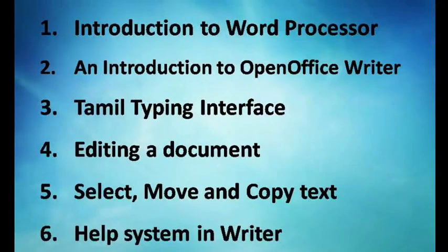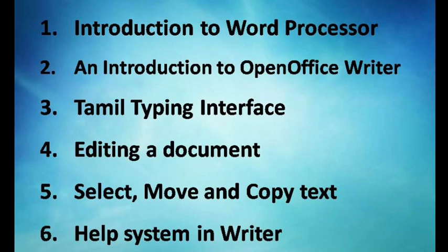That's all about part 1 of chapter 6. In this part, we discussed introduction to word processor, introduction to OpenOffice Writer, two methods of Tamil typing, how to edit the document, how to select the document using keyboard and mouse, how to move and copy text using menu and shortcut keys, and finally the Help System in Writer including how to apply tips and extended tips using the General Settings window. We will start the next part in the next video.